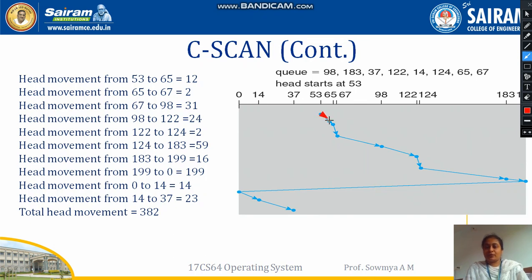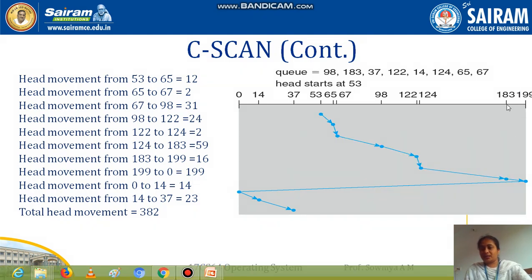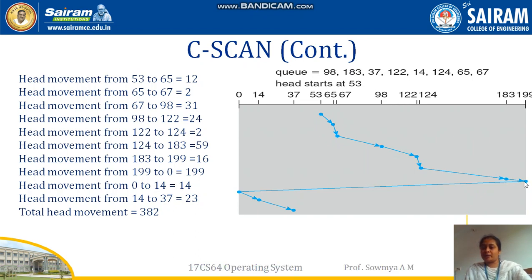In the C-SCAN example starting at 53, the head moves in the forward direction. The next value is 65, so head movement from 53 to 65 is 12. Then 65 to 67, then 67 to 98, 98 to 122, 122 to 124, 124 to 183. After 183 there are no more values in the forward direction, but the head still moves from 183 to 199. C-SCAN also suffers from unwanted disk movements.